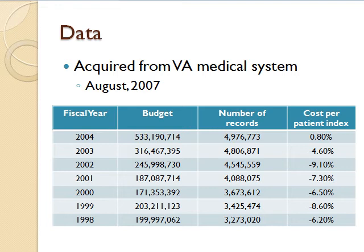Illustrated here is the data acquired from the VA in August 2007. This table shows an accumulation of data for seven fiscal years, from 1998 to 2004. Also shown are the budget, the number of records used, and the cost per patient index.